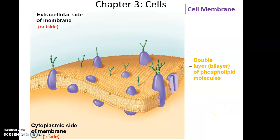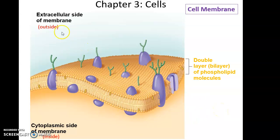The cell membrane is a double layer, or bilayer, made up of phospholipid molecules. You can see the phosphate head and the fatty acid tails making up two sheets — those two sheets form the cell membrane — separating the extracellular side (the outside) from the intracellular, or cytoplasmic, side.